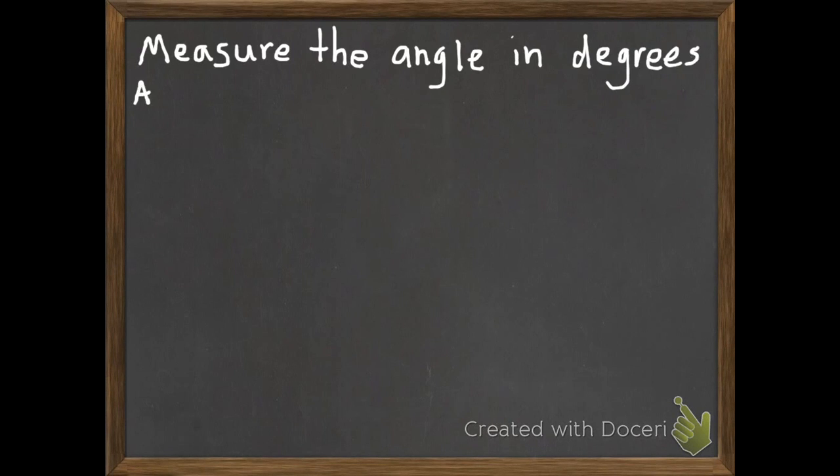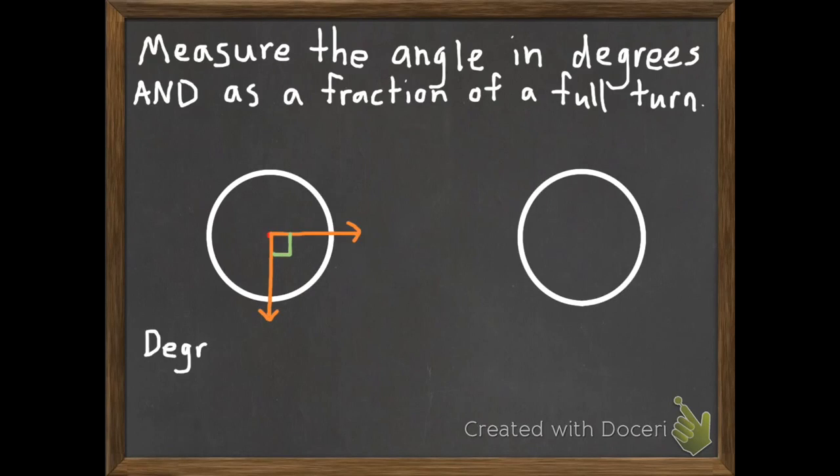Okay, second example. Measure the angle in degrees and as a fraction of a full turn. So we're going to give an answer like we would have yesterday based on the turns. Now we're going to add in the degrees. So here are some angles. We need to know the degrees and the turn.